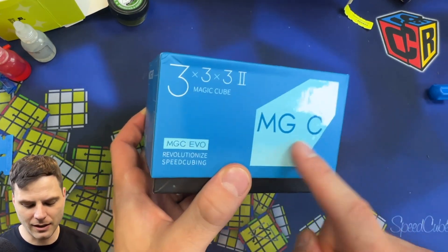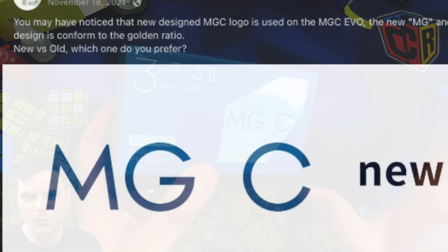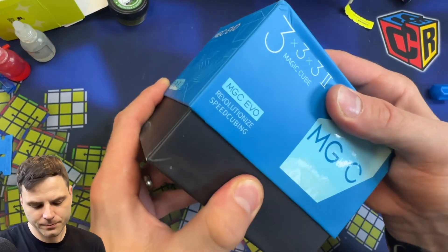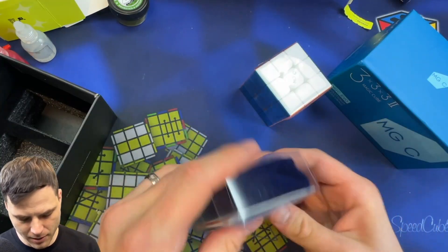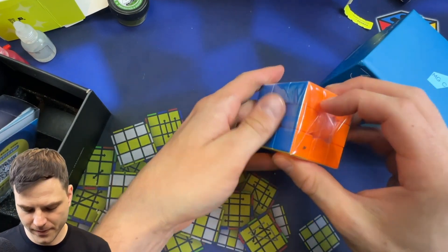Now, my only thing is I don't really like that spacing in that logo. YJ says it's beautiful, it's perfect, but anyways. Version 2 of the MGC EVO. Got our bag in here. Nothing else really crazy. Let's look at the cube. Let's get right to it.